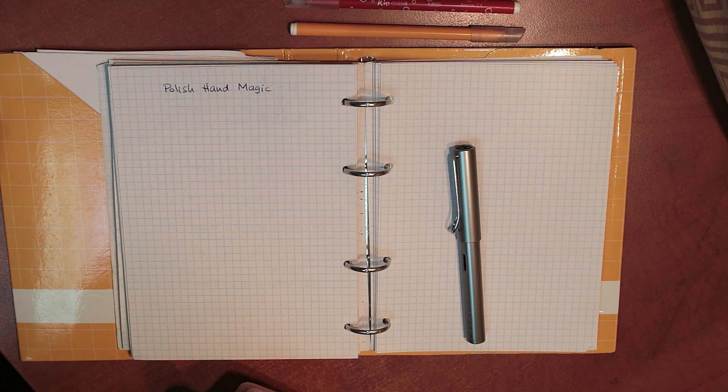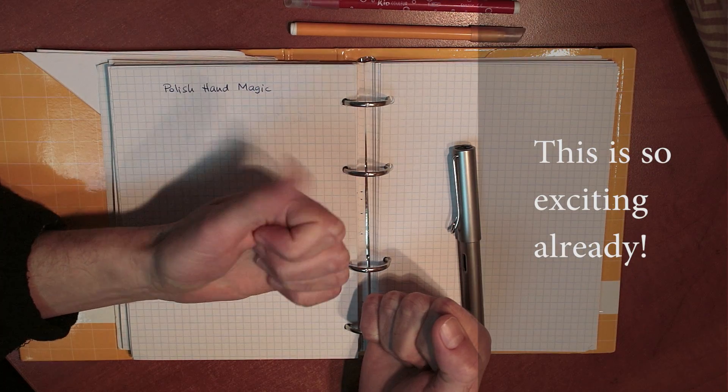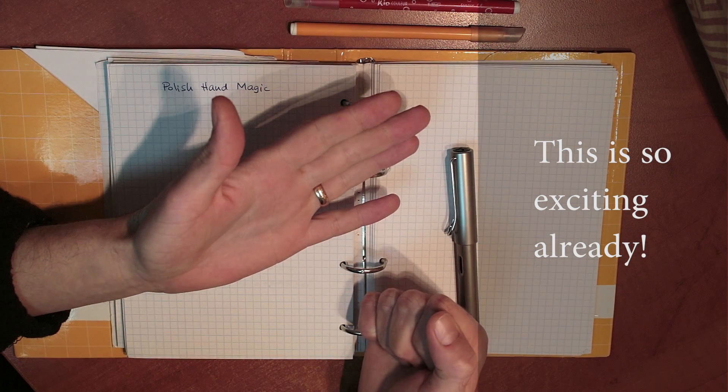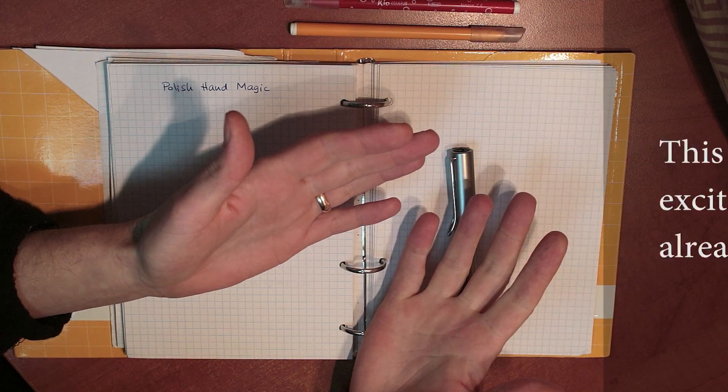When people count using their hands, they do it like this: 0, 1, 2, 3, 4, 5, 6, 7, 8, 9, 10.